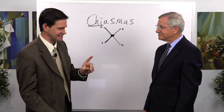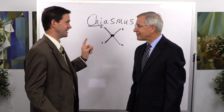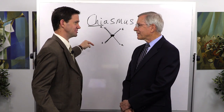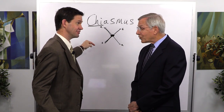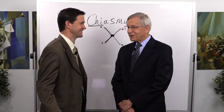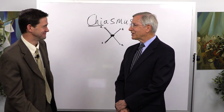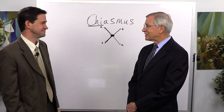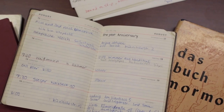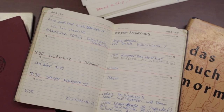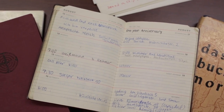Correct me if I'm wrong, but the day you discovered chiasmus was the center point of your mission. That's correct. It was on August 16th, 1967, and it was the exact halfway point of my mission. So it marked the spot — X marks the spot. What a great day to find that.